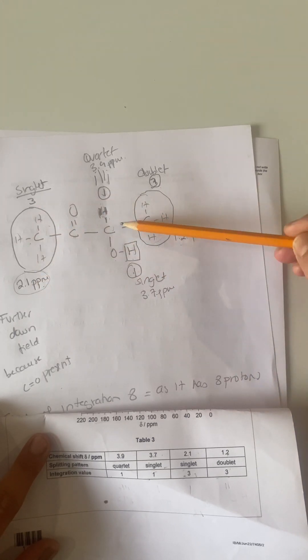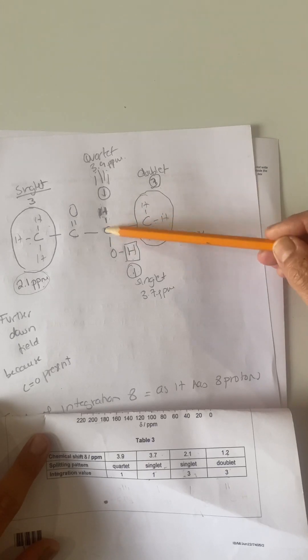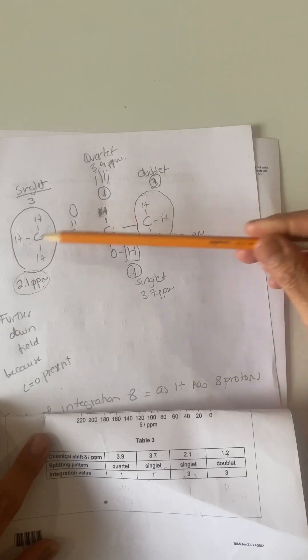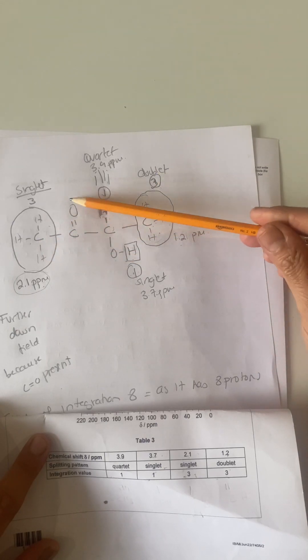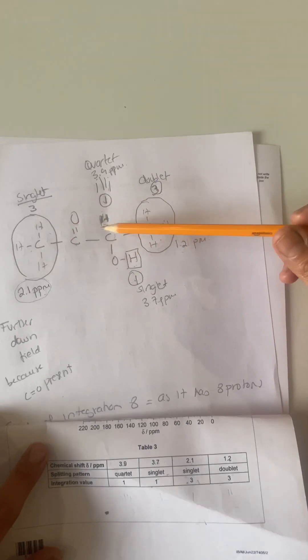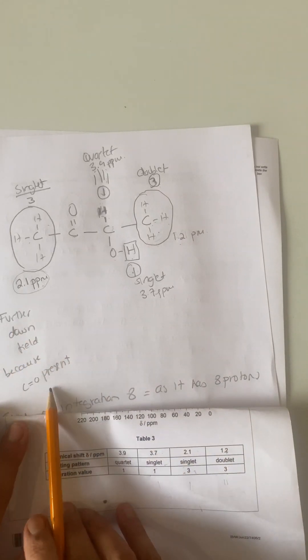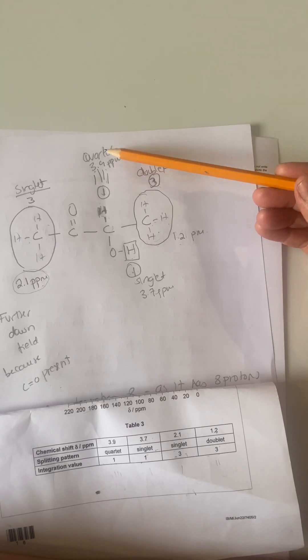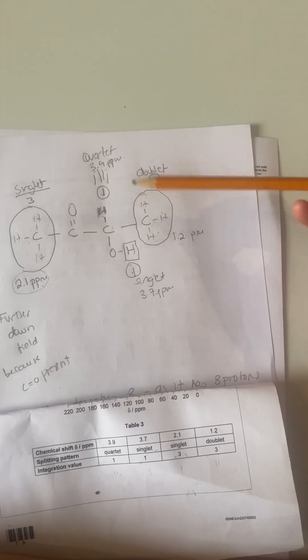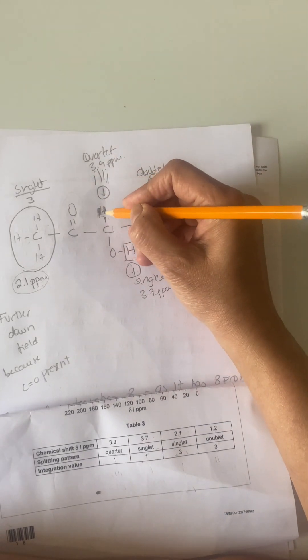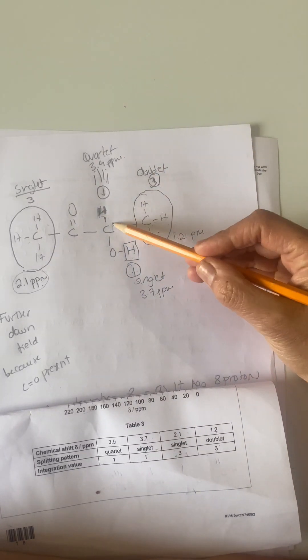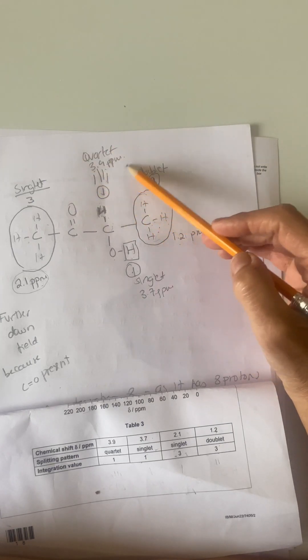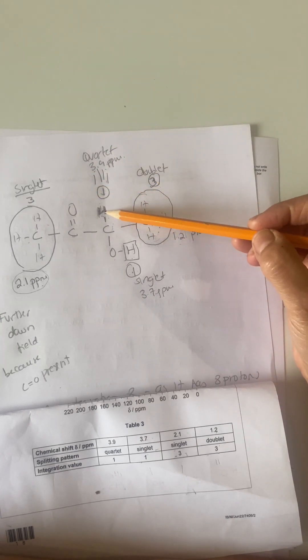This has to be further downfield than that bit there because that CH3 has something attached to it which pushes downfield. Further downfield because C=O is present for this reason here. So then you have a quartet here because you've got one hydrogen here with a carbon with three hydrogens there. So my neighbor has three hydrogens, so it forms a quartet. But the integration of this is one; there's only one hydrogen.